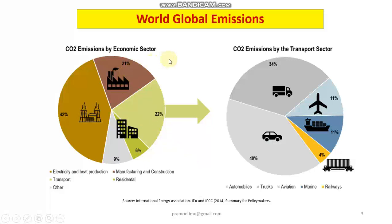Starting with world global emissions, this figure shows carbon dioxide emissions by each sector. A study conducted by the International Energy Association found that almost 22% of carbon dioxide emissions come from the transport sector. When the transport sector was analyzed, the shipping industry accounted for around 11% of those emissions, which reflects roughly 2.5% of total global carbon dioxide emissions.